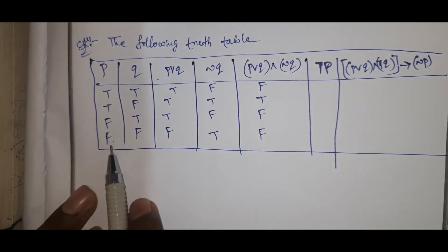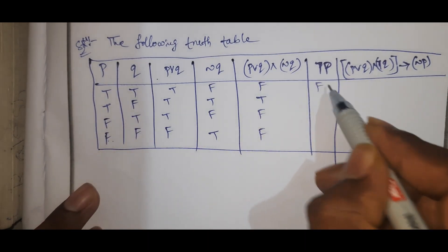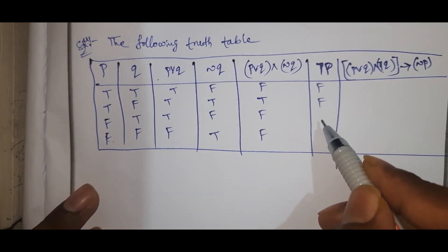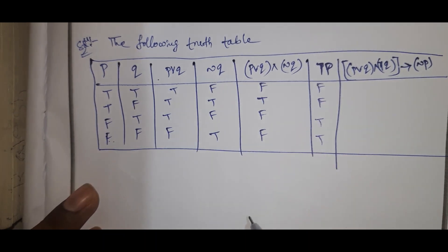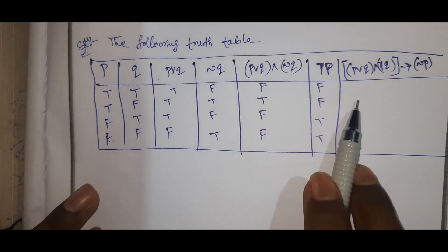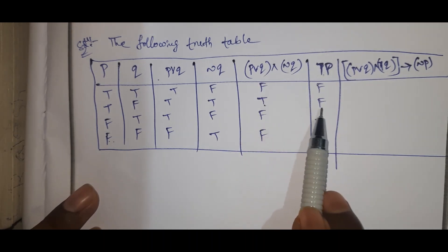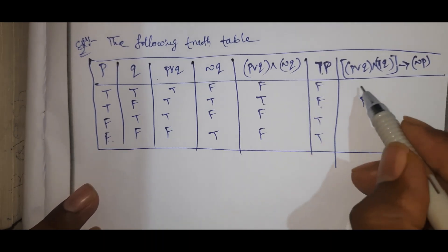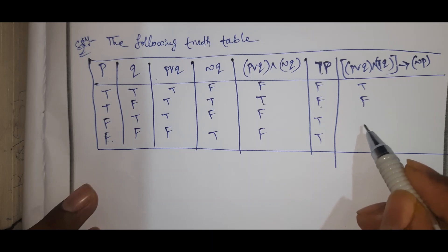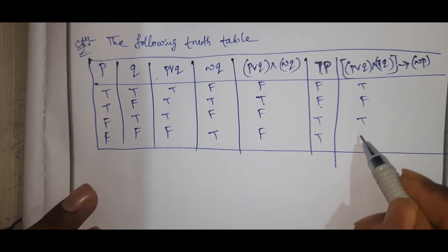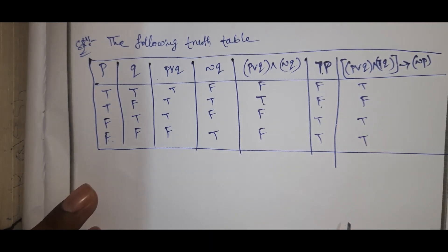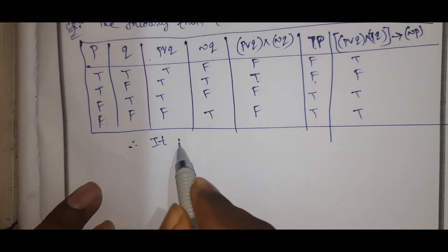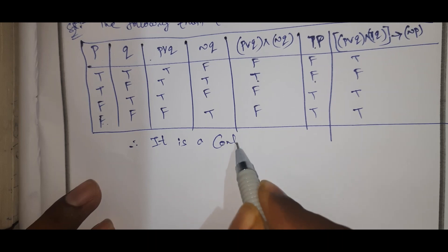The negation P column is: false, false, true, true. For the conditional column: when the first statement is true and the second is false, the result is false. The remaining results are true. This gives a mix of true and false, therefore it is a contingency.